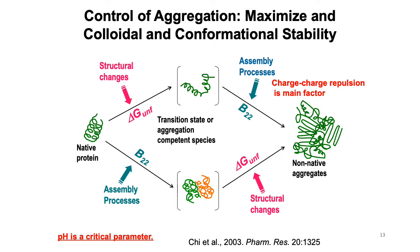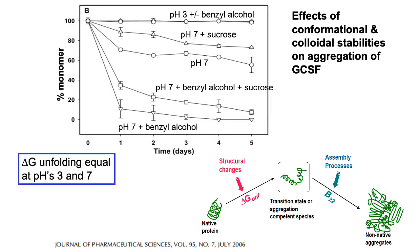To summarize: the native state going to a partially unfolded state is a key component of aggregation. But there's a second governing factor, and that's the intermolecular energetics, which are often indicated by a measured parameter called the osmotic second virial coefficient. The main component playing a role here is charge-charge repulsion. Therefore, pH is a critical parameter governing protein aggregation. Here's an example of the importance of so-called colloidal stability.